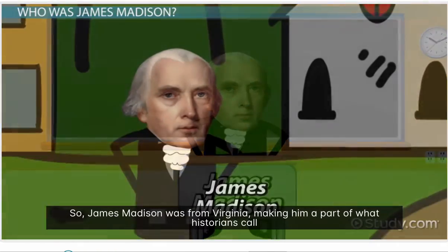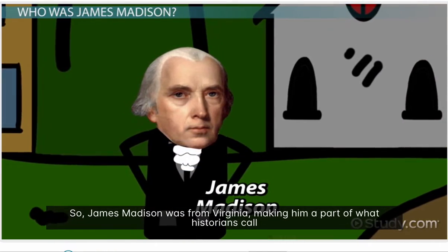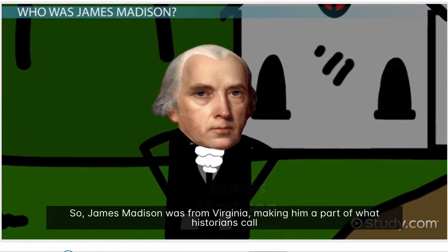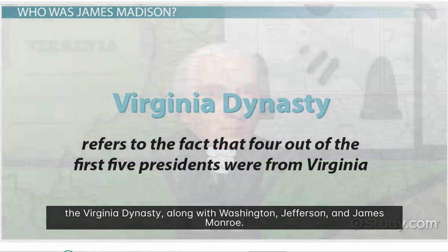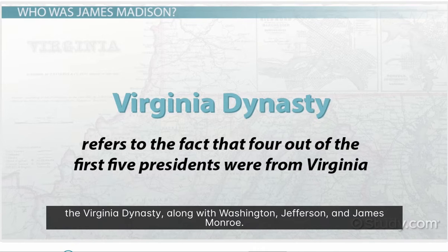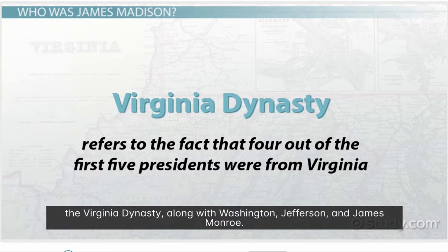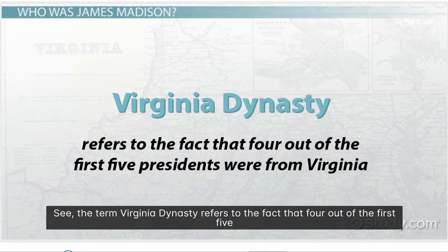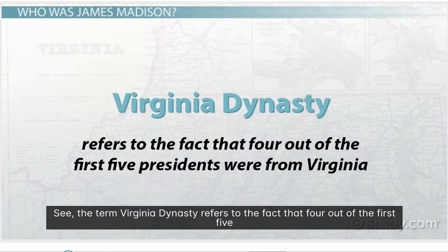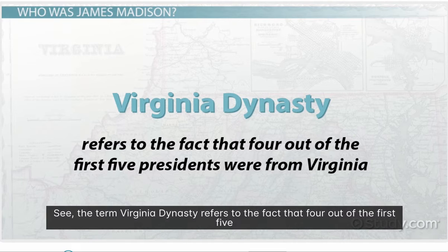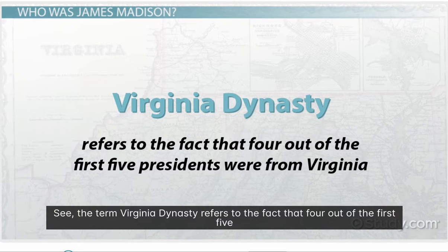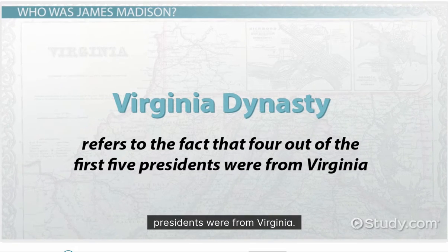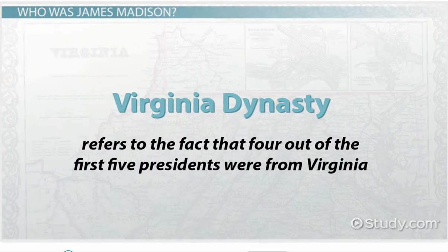James Madison was from Virginia, making him a part of what historians call the Virginia Dynasty, along with Washington, Jefferson, and James Monroe. The term Virginia Dynasty refers to the fact that four out of the first five presidents were from Virginia.